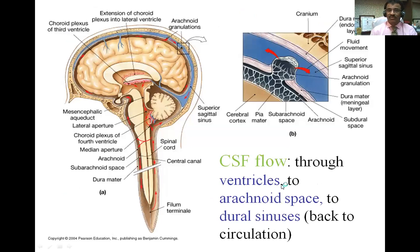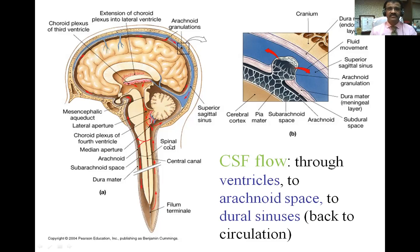You can see the CSF flow through ventricles to subarachnoid space to dural sinus and back to circulation. From arterial blood, CSF is produced by the choroid plexus — shown in pinkish red — then circulates inside and outside the brain, and is brought back to venous blood. You can see the arachnoid villi and arachnoid granulations, where CSF from the subarachnoid space is reabsorbed into the dural sinus.